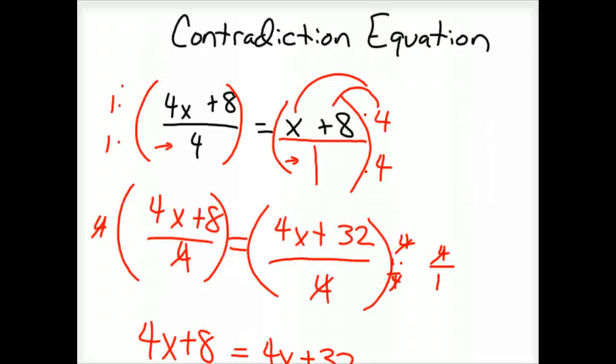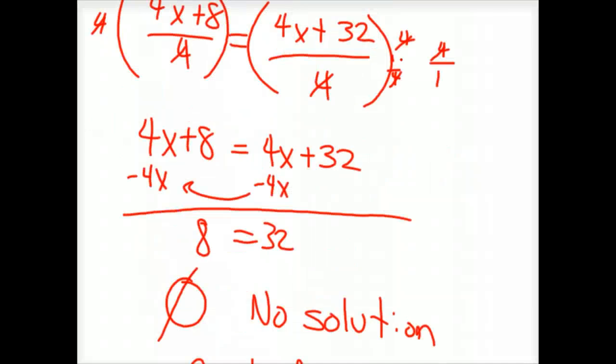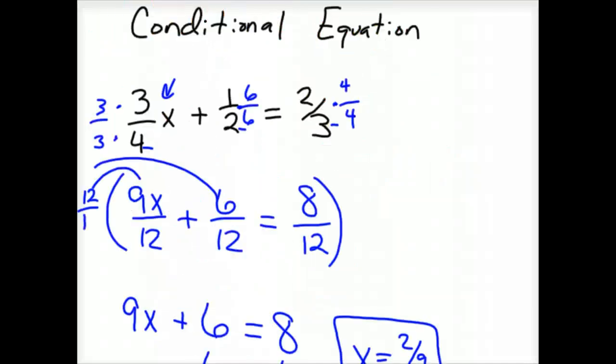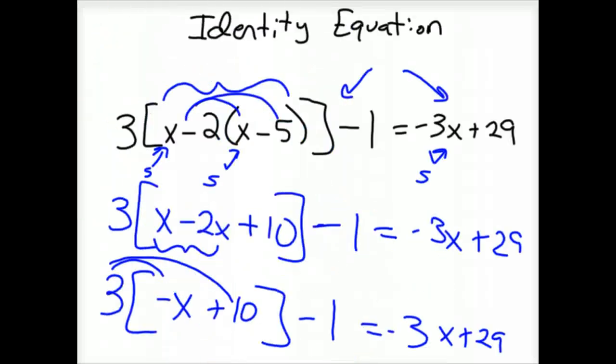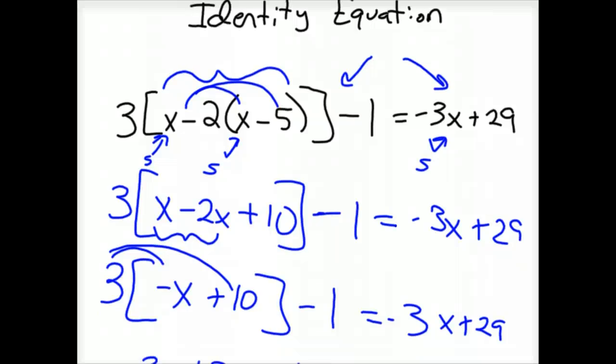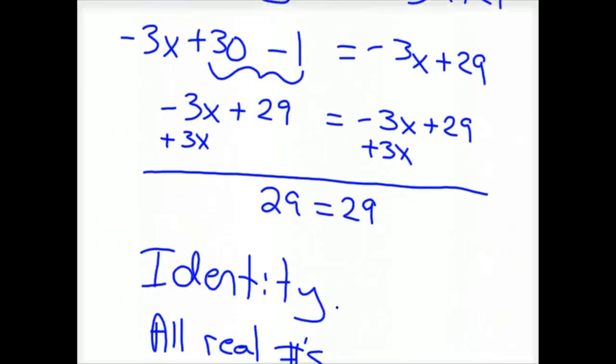Contradiction is when you have no solution or a solution is not possible. A conditional is when you actually get an answer. In our case we've got 2/9. And then the third one is identity, which means you've got an infinite amount of answers. All real numbers would work in this equation. And we call that the identity equation.